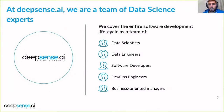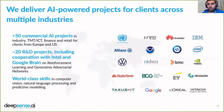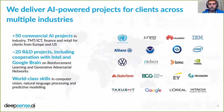At DeepSense AI we are a team of data science experts. We turn our expertise into AI-powered solutions for our clients. We are a team consisting of data scientists, data engineers, software developers, DevOps engineers and business-oriented managers. We have a proven track record of more than 50 commercial AI projects in multiple branches of industry. We work for companies from all over the world, both large companies and startups. We also conducted R&D projects in cooperation with Intel and Google Brain on reinforcement learning and generative adversarial networks. As a team we guarantee world-class skills in computer vision, NLP and predictive modeling.